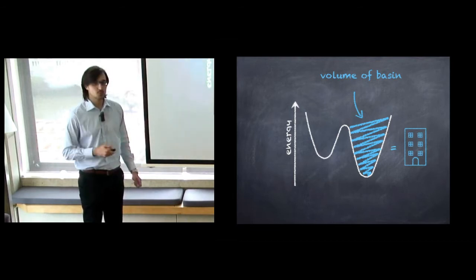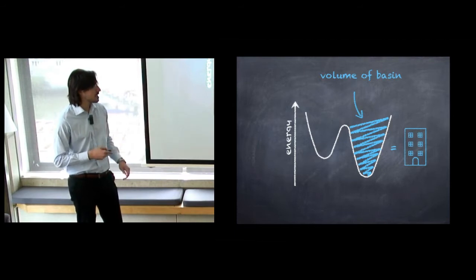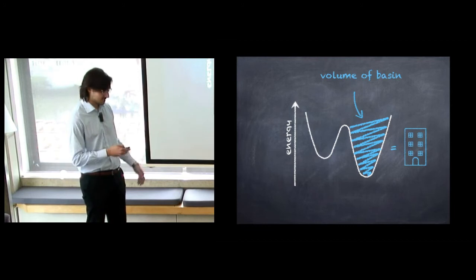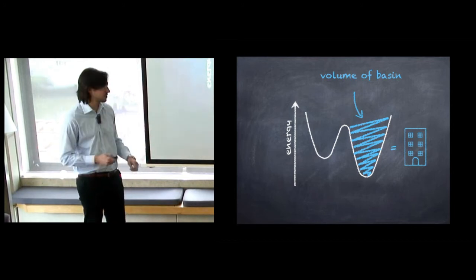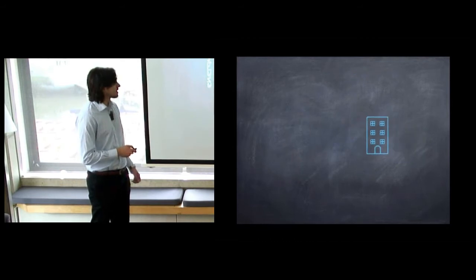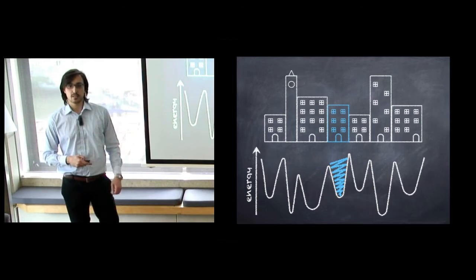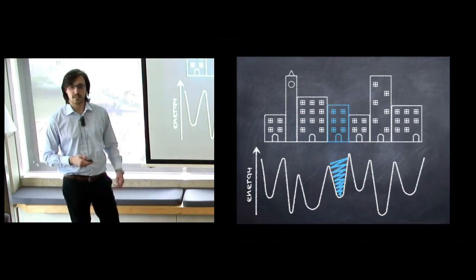It turns out that through some elaborate technique we can compute the volume of a basin of attraction. Just as in our initial analogy, the volume of the basin is proportional to the probability that we're going to find it during our exploration of the energy landscape, just as we were much more likely to spot large buildings. Therefore, by surveying the energy landscape—which is the set of all possible configurations for the system—we can construct something very similar to the town landscape that we talked about at the beginning.